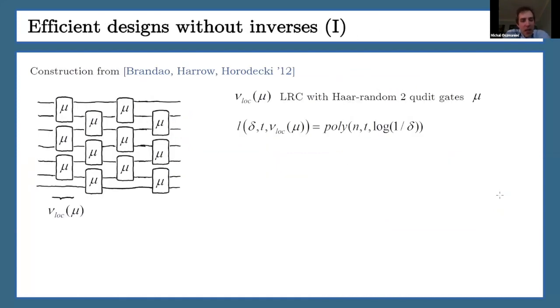Now the last thing I want to discuss is the efficient construction of approximately designs without requiring the inverses. So let me review first the construction by Brandao, Harrow, and Horodecki from 2012. Authors first took local random circuits wherein each step you have random two-qubit gates applied to every pair of neighboring qubits. And then it is possible to prove that you generate designs efficiently in the number of qubits and the degree of the design.